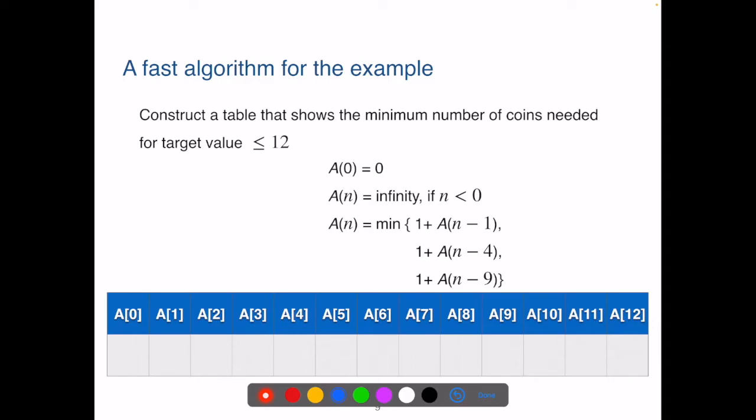How can we avoid solving the same sub-problems repeatedly? Here is a fast algorithm. We can construct a table and create a list A with indices from 0 to n. It stores the solution of the problem with input values ranging from 0 to n. Now let's use the coin system 1, 4, 9 again and the target value of 12. We construct a table storing the result of target value being 0 all the way to 12. When n is 0, that's the base case, we know its value should be 0.